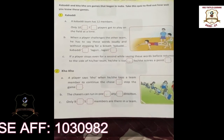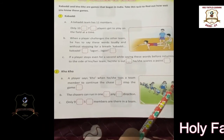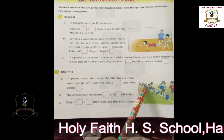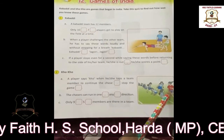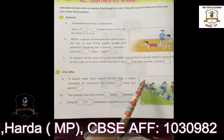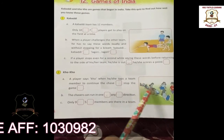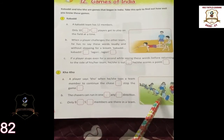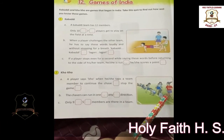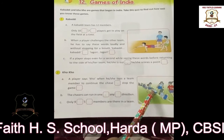There are 2 teams in Kho Kho: the runners and the chasers. See, this girl is running, so she is from the runners team. And the girls sitting are from the chasers team. Chasers have to catch the runner. The player says 'ko' when he or she taps a team member to continue the chase.